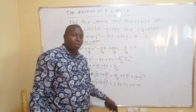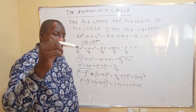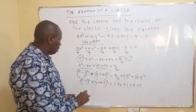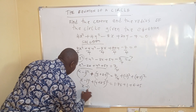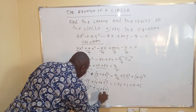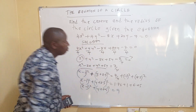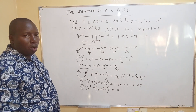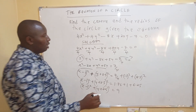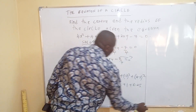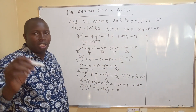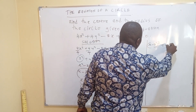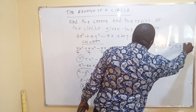Because minus 1 squared is 1, when you add 1.75 plus 1 plus 6.25 you get 9. So therefore x minus 1 squared plus y plus 2.5 squared equals 9.